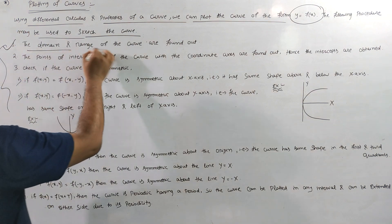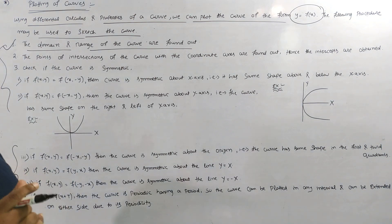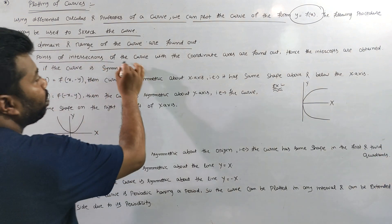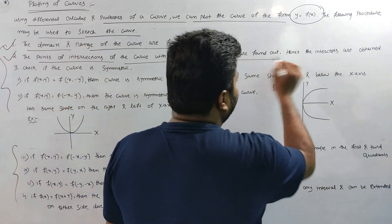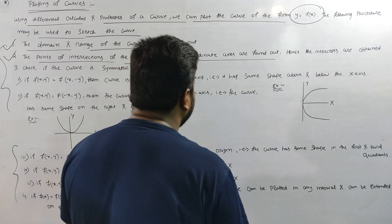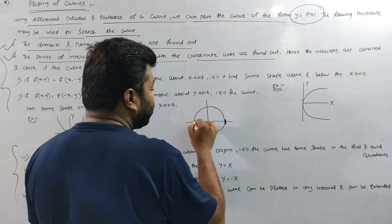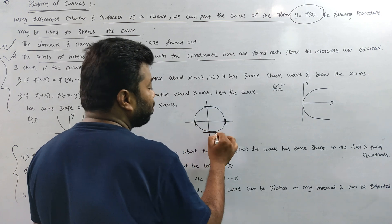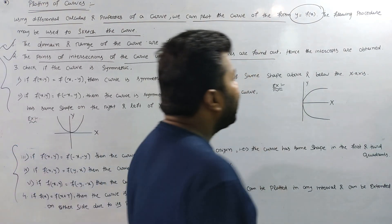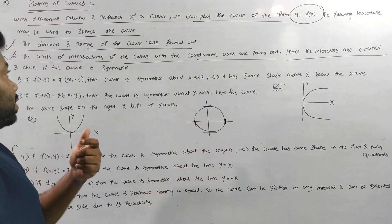First, the domain and the range of the curve must be found. Create the curve within the boundary area. The second point is that the points of intersection of the curve with the coordinate axes are found. These intersection points are interpreted, and the intercepts are obtained.